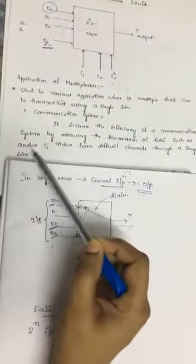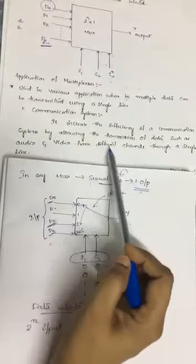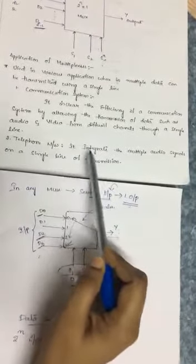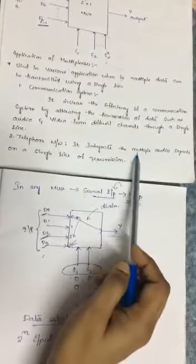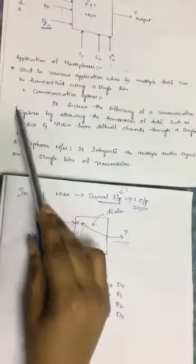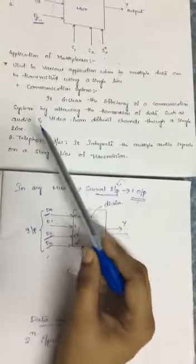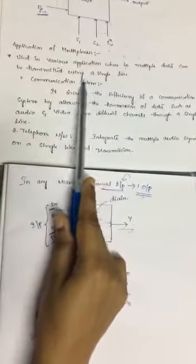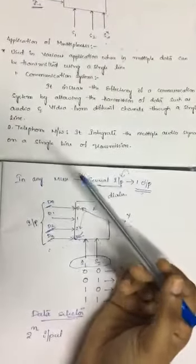In communication systems, you can transmit audio and video signals from different channels through a single line by combining them. Another important application is in telephone networks, where multiple audio signals are integrated on a single transmission line. These are two important applications of the multiplexer, and the advantage is that you can transmit multiple data through a single line.